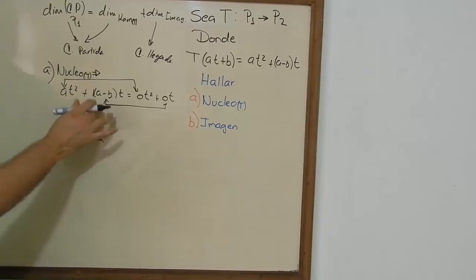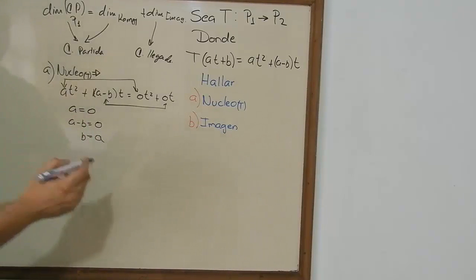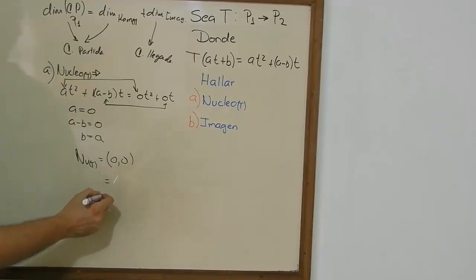So that means that the vector we get for the kernel is (0, 0). There you go. And if we put it in another notation, that'll be 0·t plus 0. Here we have it.